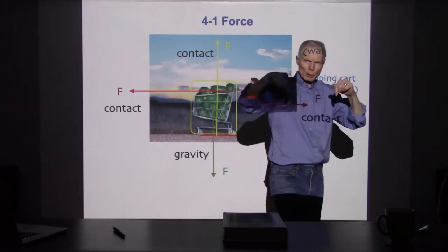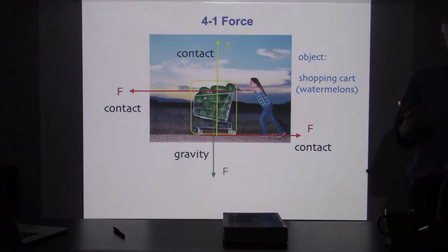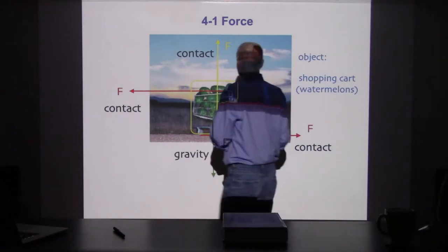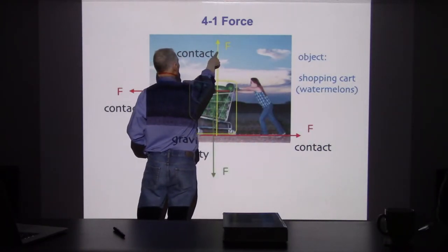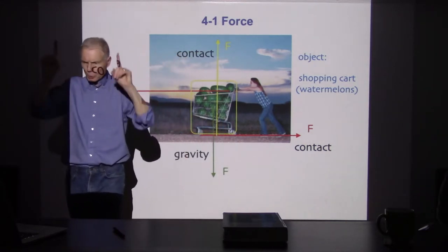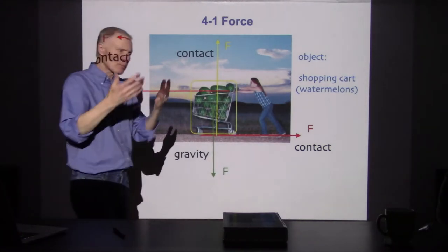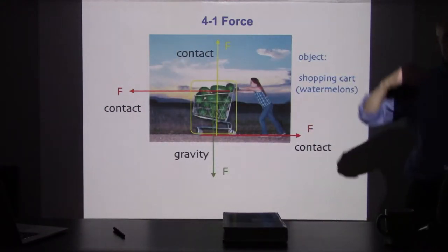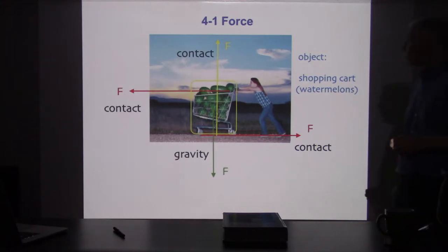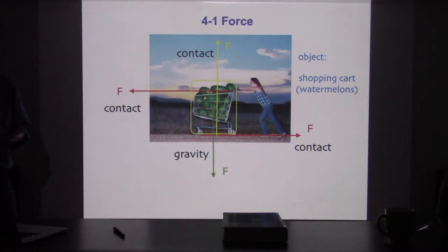The shopping cart is pushing down on the pavement, but we're thinking about forces acting on the shopping cart. The pavement is pushing upwards on the shopping cart. That happens because even concrete has a little elasticity — when you set something on concrete, it collapses just a bit. There's springiness between the atoms and molecules that make up any object; even the most rigid objects have a little elasticity, and it's that elasticity that's pushing back.